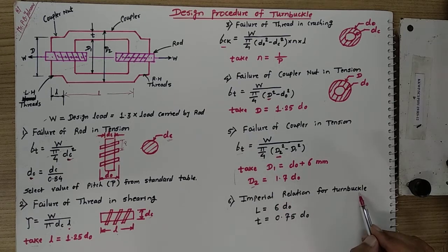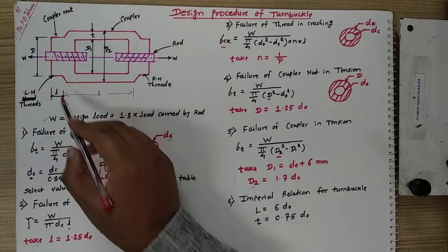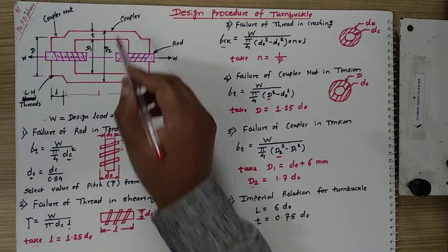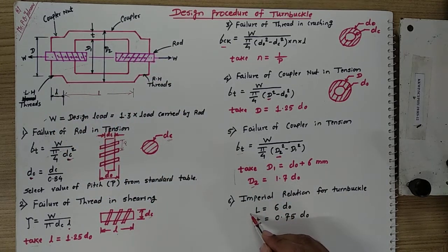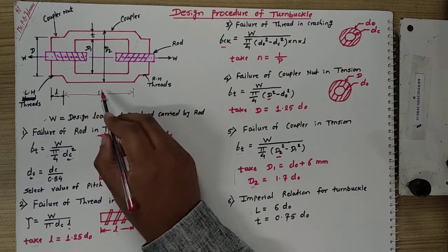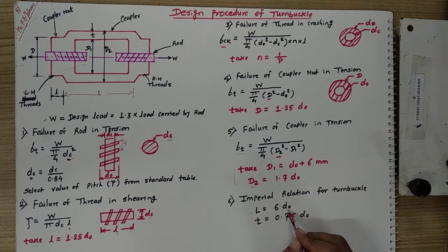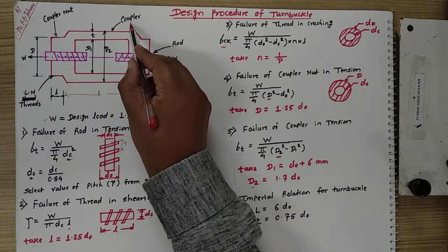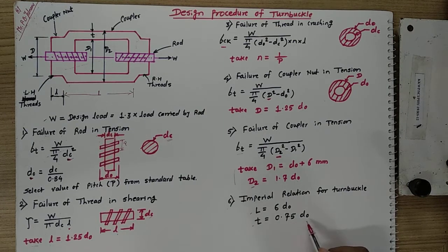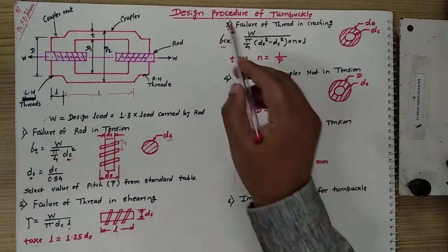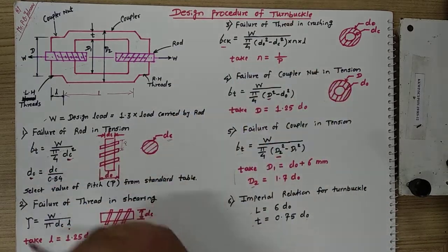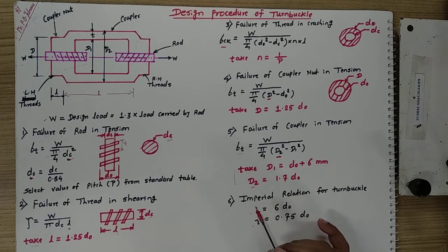The sixth and final step gives empirical relations for the turnbuckle coupler. The length of the coupler capital L equals 6 times the nominal diameter. The thickness of the coupler t equals 0.75 times the nominal diameter. There are a total of 6 steps in the turnbuckle design procedure. Thank you very much; please like and subscribe to the channel if you found this video helpful.